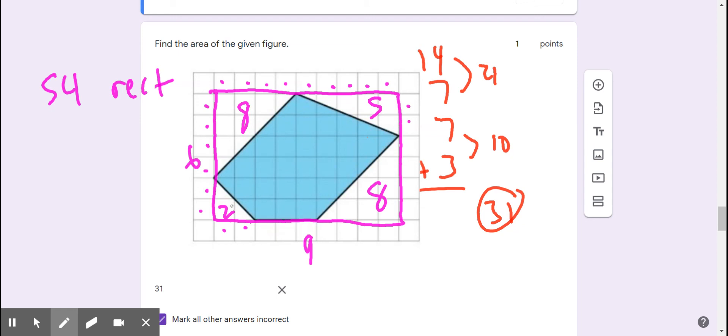So we've got eight square units plus two square units plus five square units plus eight square units. I'm going to add all of those up.